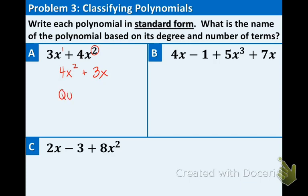And this polynomial is called a quadratic binomial. The quadratic part comes from degree 2 and binomial comes from there being two terms. And that's it for part A.